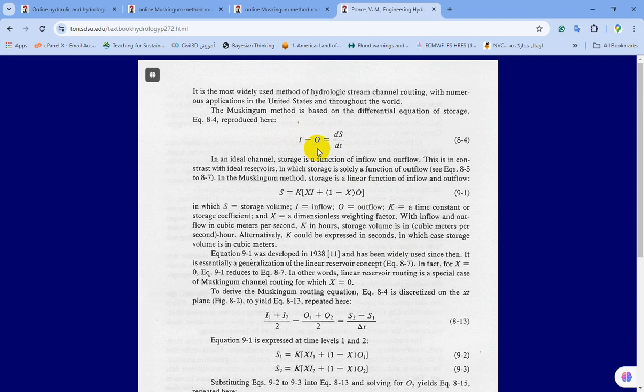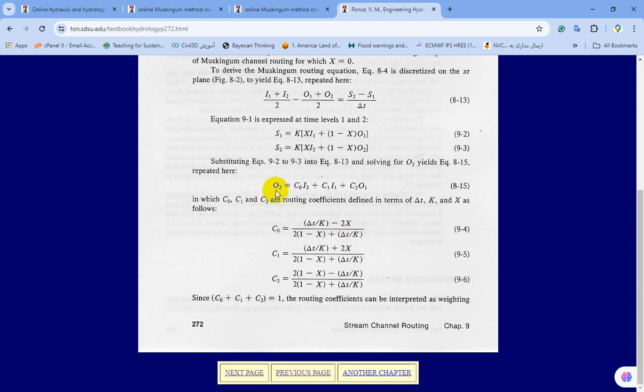It assumes that storage is a function of input, output, and the variables K and X. K and X must be calibrated for a specific reach. I indicates the input hydrograph components and O indicates the output hydrograph. After combination in this formula, you can find the final formula for flood routing based on the Muskingum method. For using this method, you should calculate three different variables: C0, C1, and C2, and all of them are functions of delta T, K, and X.